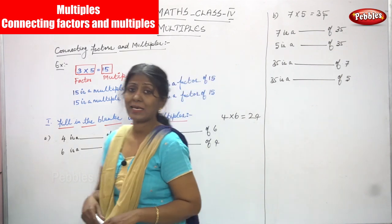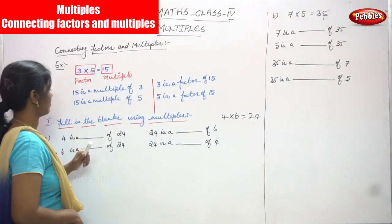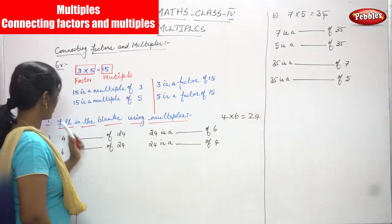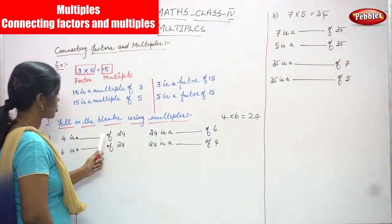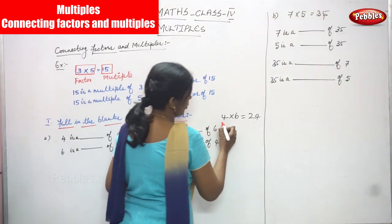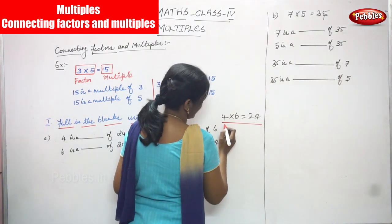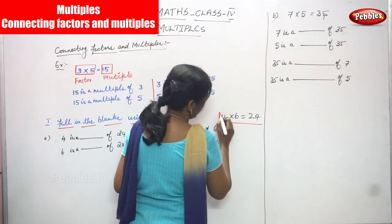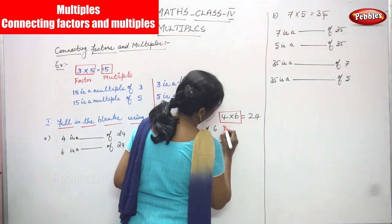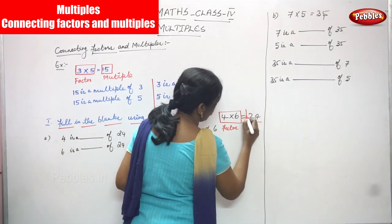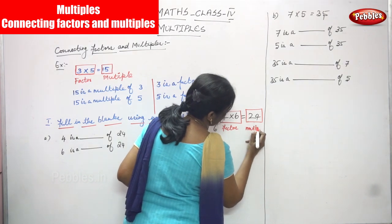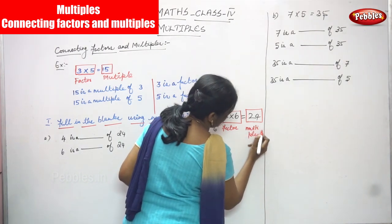Now we are going to solve the exercise. The first question is fill in the blanks using multiples. So: 4 is a dash of 24. That means we can write 4 into 6 is equal to 24. Here, 4 and 6 are factors, and 24 is a multiple — it is the product.